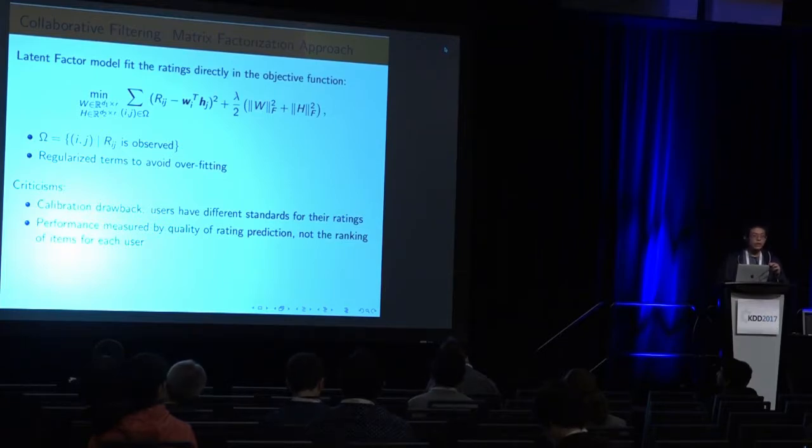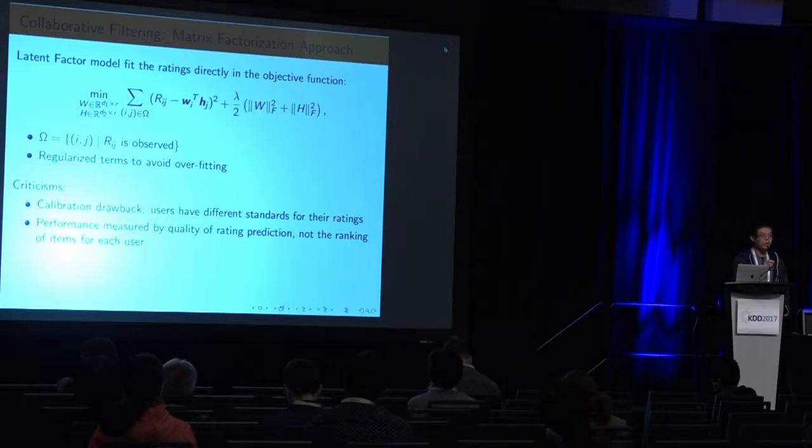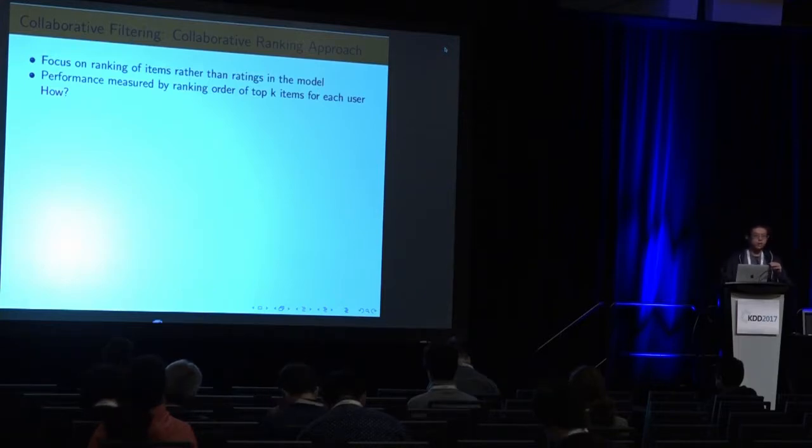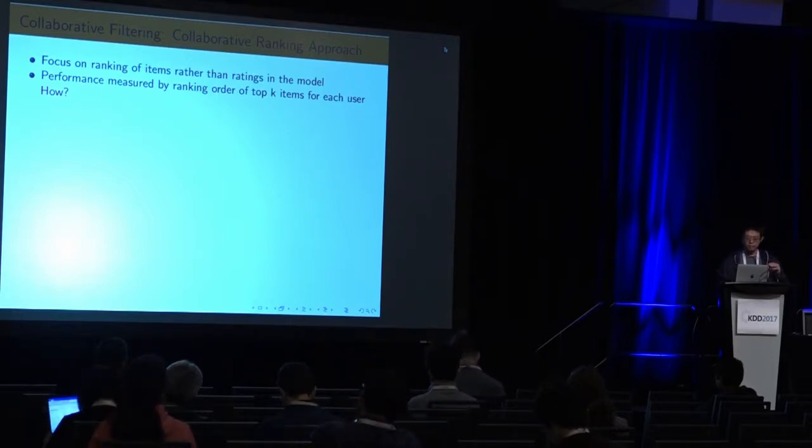But there are many criticisms about this approach. Users have different standards for their ratings. One user may tend to rate higher, where others may tend to rate lower. The performance in a time test is measured by the RMSE. But in real life, we recommend the list to your users. The top items in the list is much more important than the bottom part. Our approach is we are not focusing on the ratings. We are focusing on the ranking of items rather than ratings in the model. Our performance is measured by ranking order of top 10 items for each user.